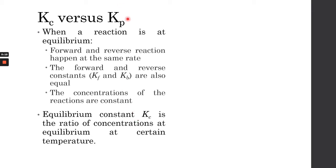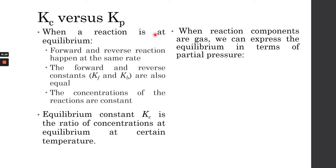Now let's talk about how Kp is different from Kc. When reaction components are in gas form — we are not dealing with liquids and solids — we can express the equilibrium constant in terms of partial pressure. Partial pressure is basically the pressure that a gas exerts, similar to vapor pressure. It is the force or pressure that gases exert on the container. You can think of this reaction happening inside a container, and since they are gases, they exert some form of pressure — they're pushing onto the container.